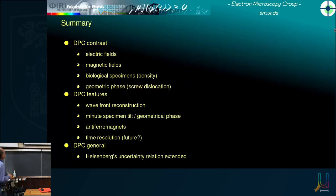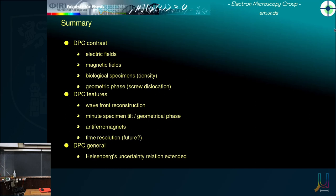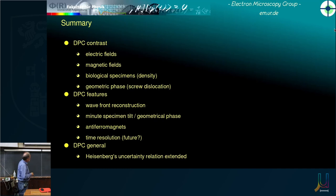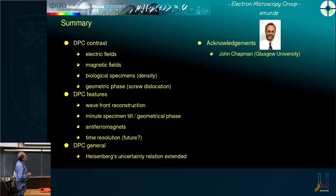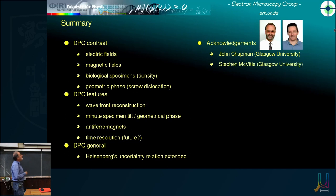Summary: DPC contrast arises from electric and magnetic fields, from biological specimens via density variations, and from geometric phase near a screw dislocation. Key capabilities include wavefront reconstruction, extreme sensitivity to minor specimen tilts, antiferromagnet imaging, potential time-resolved measurements, and the extended Heisenberg uncertainty relation allowing prediction of electron requirements for specific momentum and lateral resolution. Acknowledgements to John Chapman at Glasgow University who taught me differential phase contrast, his successor Stephen McVitie, Bert Freitag from Thermo Fisher for instrument access and details, and Knut Müller-Caspari for insights into picometer-range DPC.